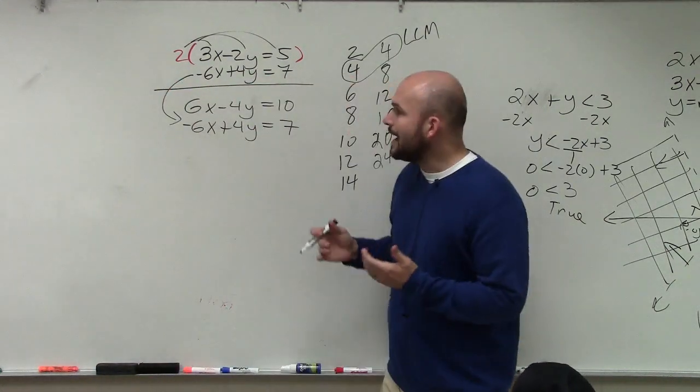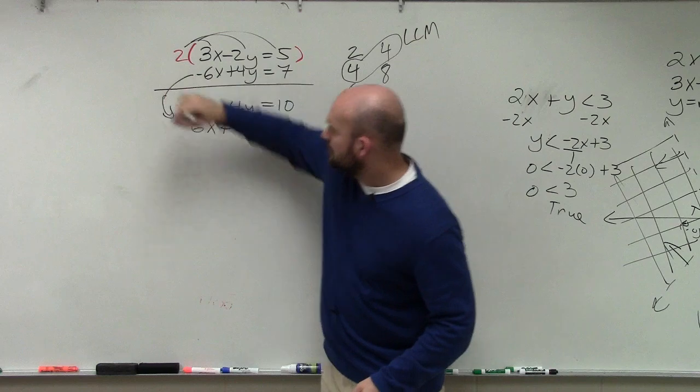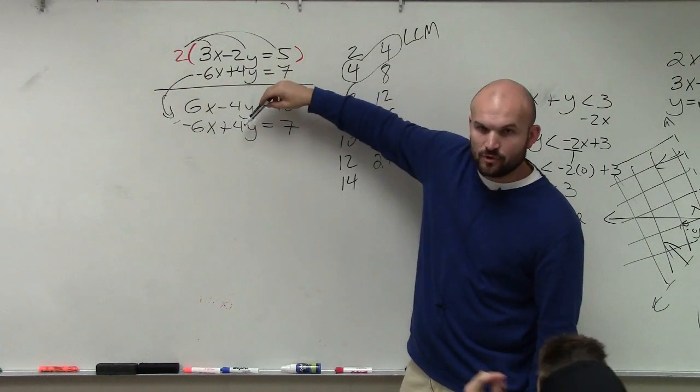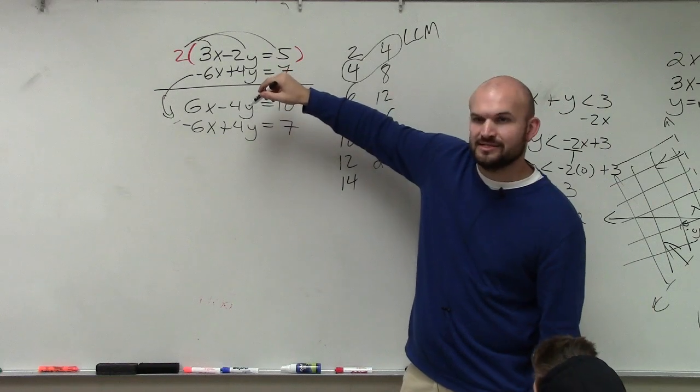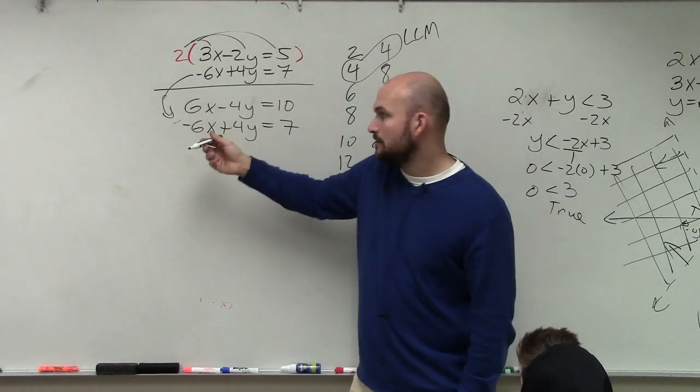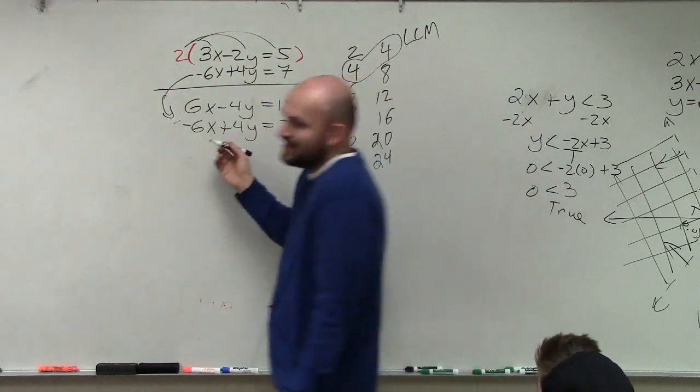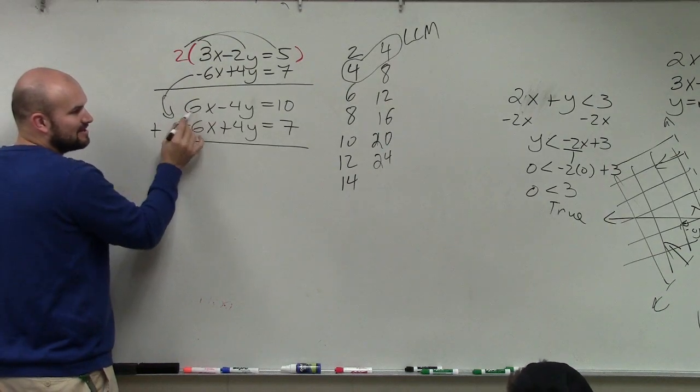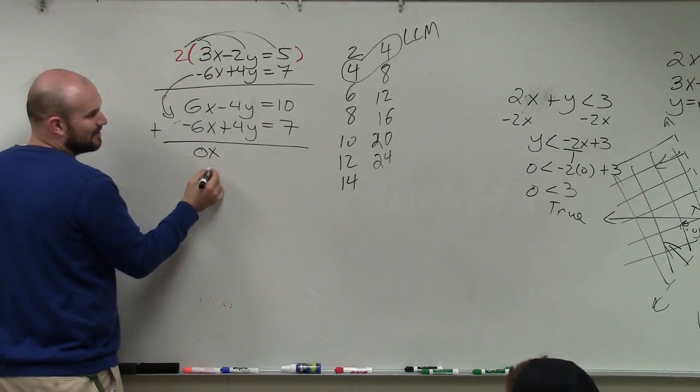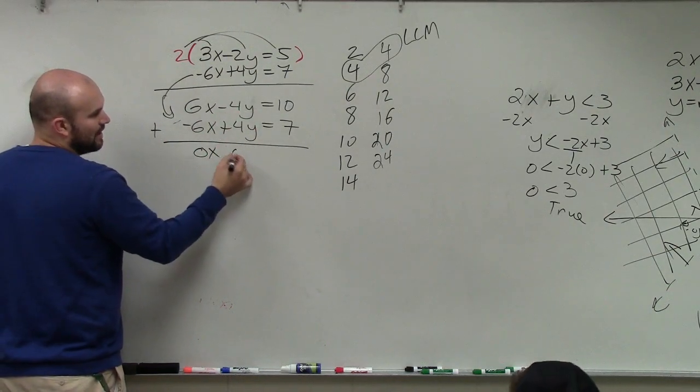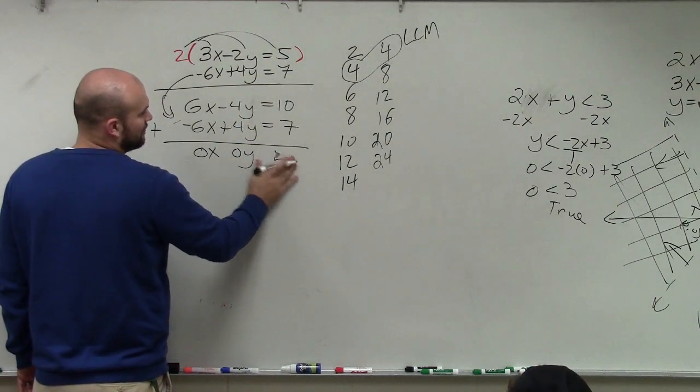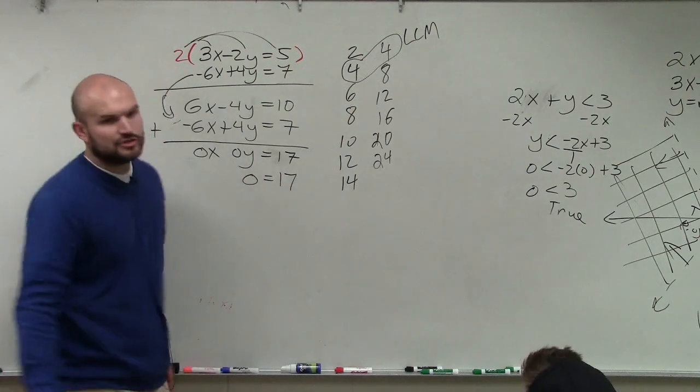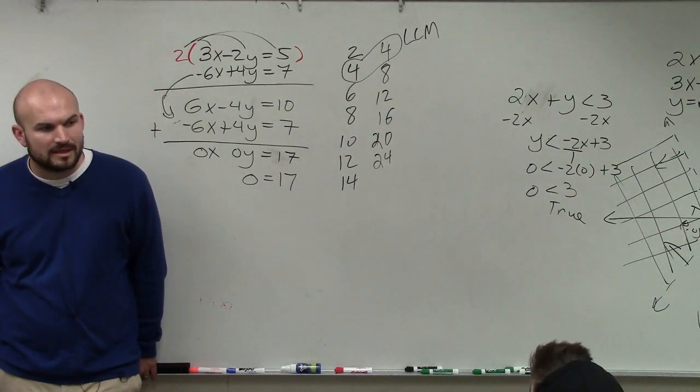Okay. Now you add or subtract. So if I have a negative 4y plus a positive 4y, should I add or subtract them to get 0? Add. One's negative, but one's positive. So now, but guess what? Look at this. 6x minus 6x is 0x. Negative 4y plus 4y is 0y. And then this equals 17. So I have 0 equal to 17. Is that true or is that false? That's false.